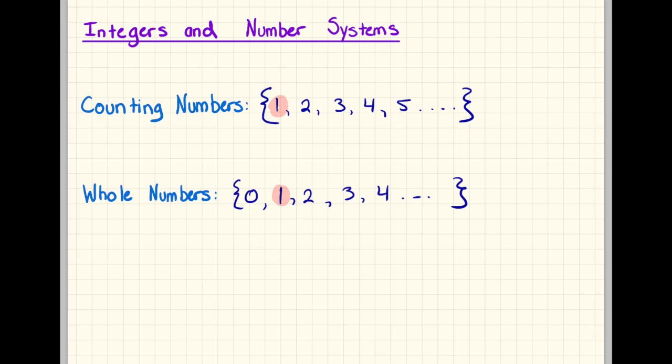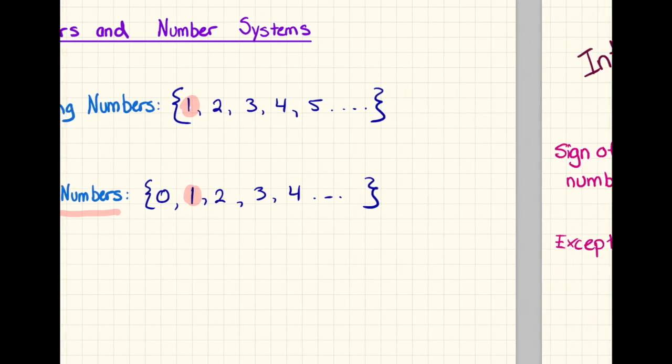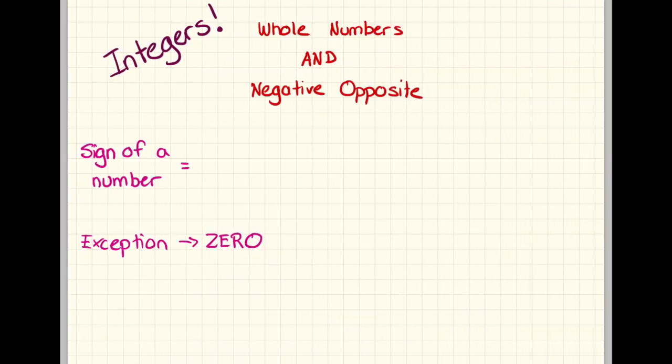Today, in this lesson, we are actually going to focus on whole numbers, but we're also going to focus on their opposites. When we're talking about what an integer is, an integer is a whole number, so 0, 1, 2, 3, but also their negative opposites.